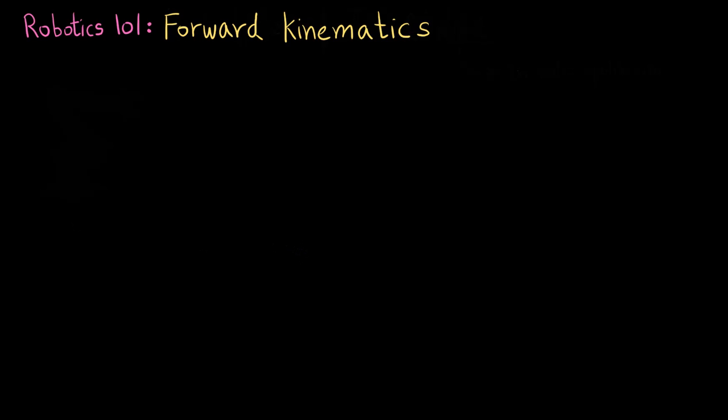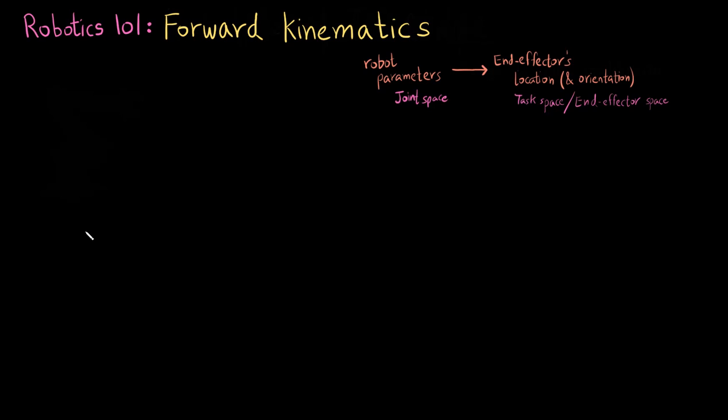So just to refresh your memory, what is forward kinematics? It is basically going from the joint space to the task space or the end effector space. The joint space is the space in which you have the robot parameters defined. So if I have a 3R robot, it is going to be the three angles of the revolute joints, and the end effector space or task space is basically the location and orientation of the end effector.